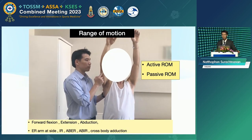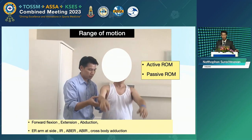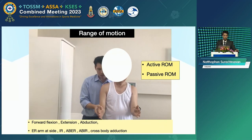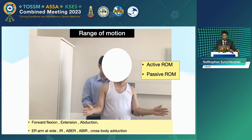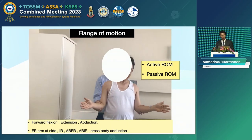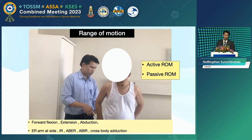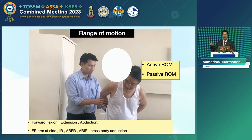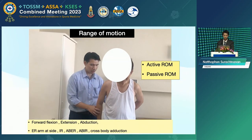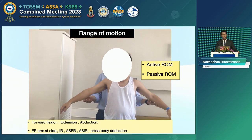In the range of motion exam, we start from active first, then passive. The range of motion includes forward flexion, extension, abduction, external rotation arm at side, internal rotation, external rotation in abduction at 90 degrees, abduction, internal rotation, and cross-body adduction.